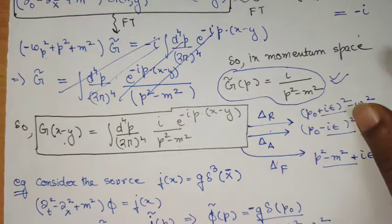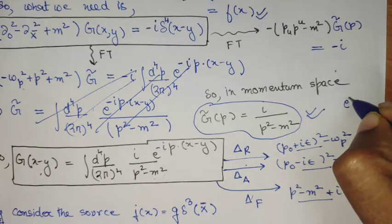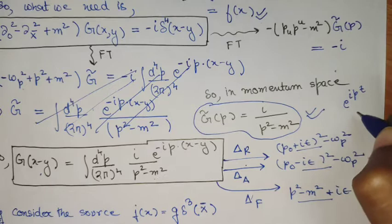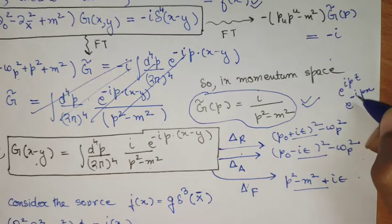One thing is important when taking the Fourier transform: the time space picks up a factor of e^(ipt), but the position space has a Fourier factor of e^(−ipx). So this is a convention — the time gets Fourier transformed in an opposite fashion — which we have taken into account.